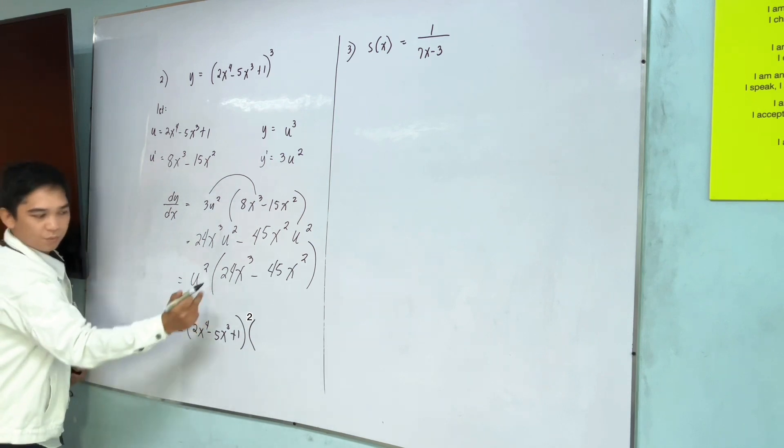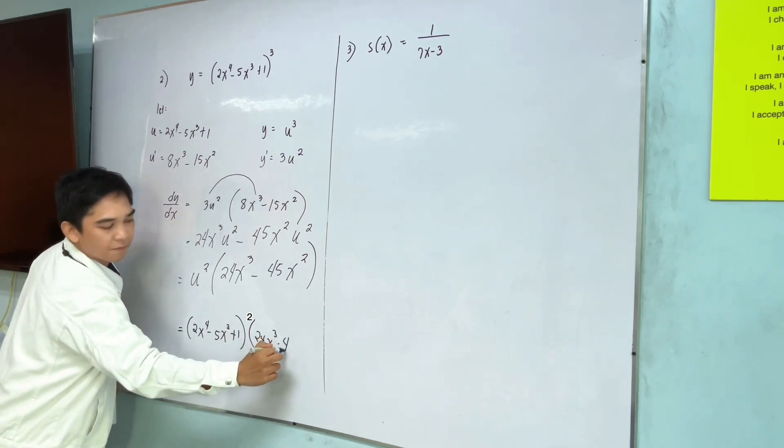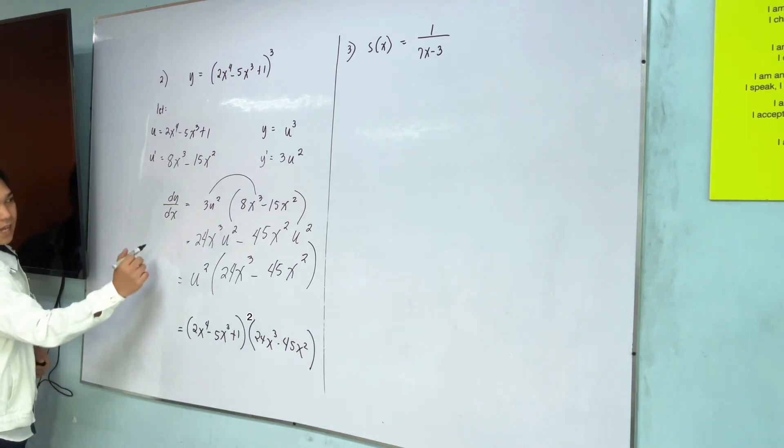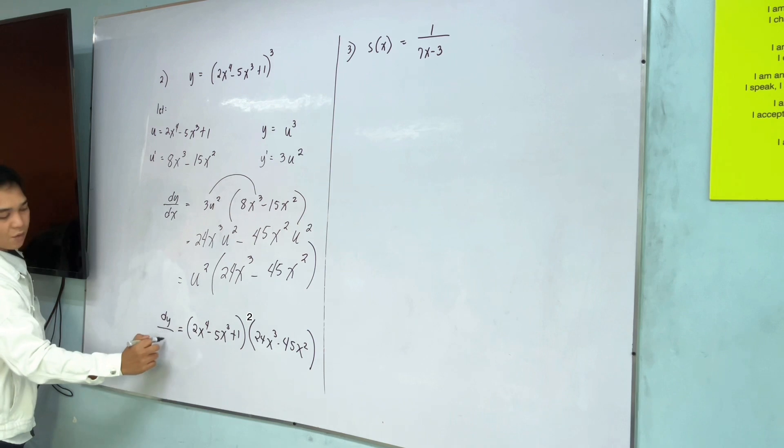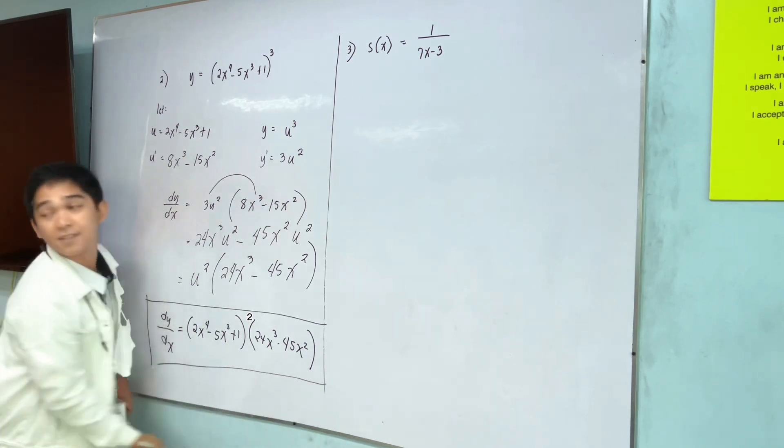Multiply to. So, this is now the dy over dx. This is now the final answer. Thank you.